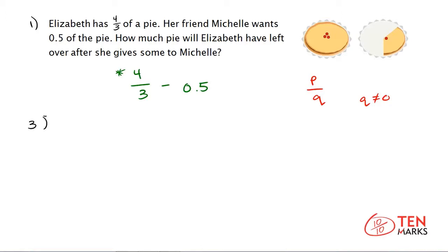3 is the divisor and 4 is the dividend. How many times does 3 go into 4? 3 goes into 4 one time. 1 times 3 is 3, and you subtract: 4 minus 3 is 1. Now you want to divide 3 into 1, but you can't because 3 is greater than 1, so you need to add a decimal point and bring in a zero. Bring the 0 down and ask how many times does 3 go into 10? 3 goes into 10 three times.